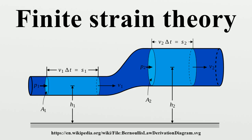To transform quantities defined with respect to areas in a deformed configuration to those relative to areas in a reference configuration, and vice versa, we use Nanson's relation, expressed as where n·da is an area of a region in the deformed configuration, N·dA is the same area in the reference configuration, n is the outward normal to the area element in the current configuration, and N is the outward normal in the reference configuration. F is the deformation gradient, and the corresponding formula for the transformation of the volume element leads to the polar decomposition of the deformation gradient tensor.